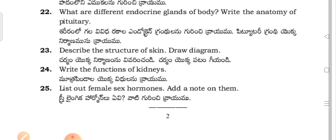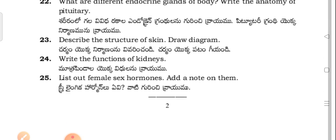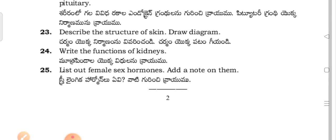What are the different endocrine glands of the body? Write the anatomy of the pituitary — Shri ram lakala viputarakkal endocrine gandhi na guri inshi rahimu. Pituitary grandhi yyoka nirmaa nirvaayimu. Describe the structure of the skin and draw a diagram — Charmum yyoka nirmaa viparinchandhi, charmum yyoka patam giyyandhi.